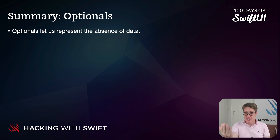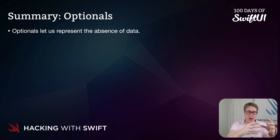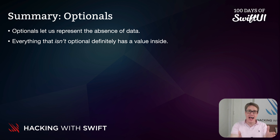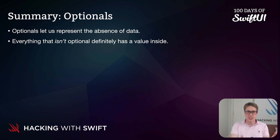First up, optionals allow us to represent the absence of data, which means we're able to say this integer has zero, or a million, or literally nothing at all — there is no number there whatsoever. It's different from zero. As a result, everything that is not optional, a non-optional, definitely has a value inside, even if it's zero, an empty string, or an empty array.